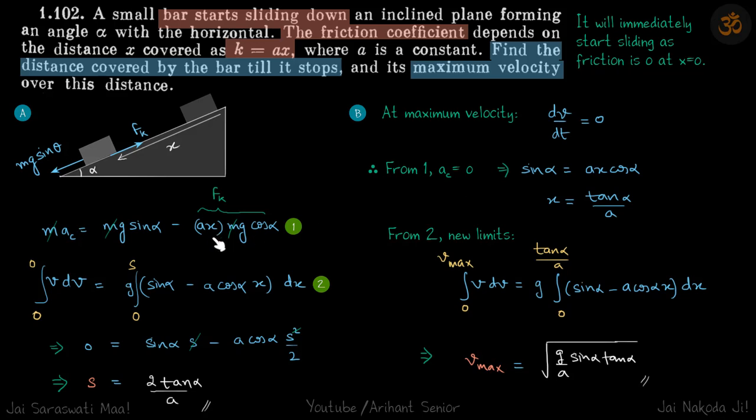Let me just write a with a subscript so that you don't get confused between this and the constant a. So the acceleration is zero when the velocity is maximum. When we do that here, we get the value of x. So at x equals tan alpha by a, acceleration is zero.